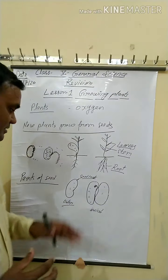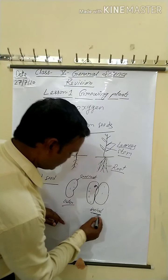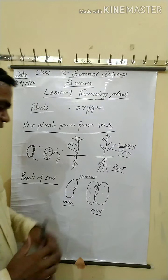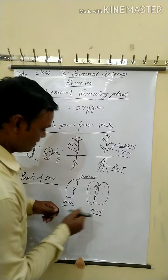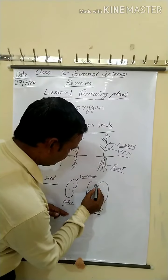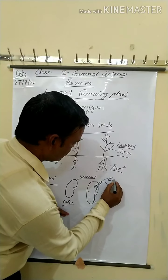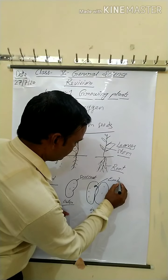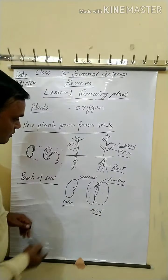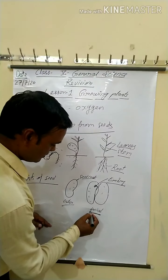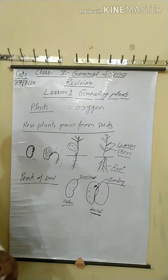This small tiny plant inside is called the embryo. When we unfold the seeds, we see the plant inside. So the parts of a seed are: seed coat, embryo, and cotyledon.